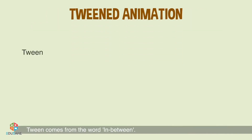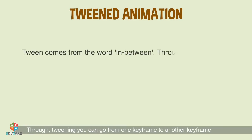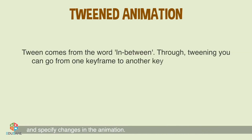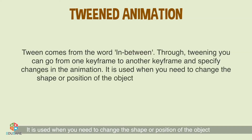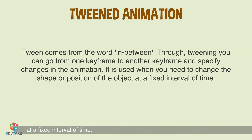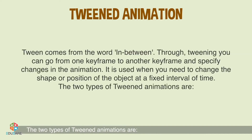Tweened Animation: Tween comes from the word in-between. Through tweening, you can go from one keyframe to another keyframe and specify changes in the animation. It is used when you need to change the shape or position of the object at a fixed interval of time. The two types of tweened animation are motion tweening and shape tweening.